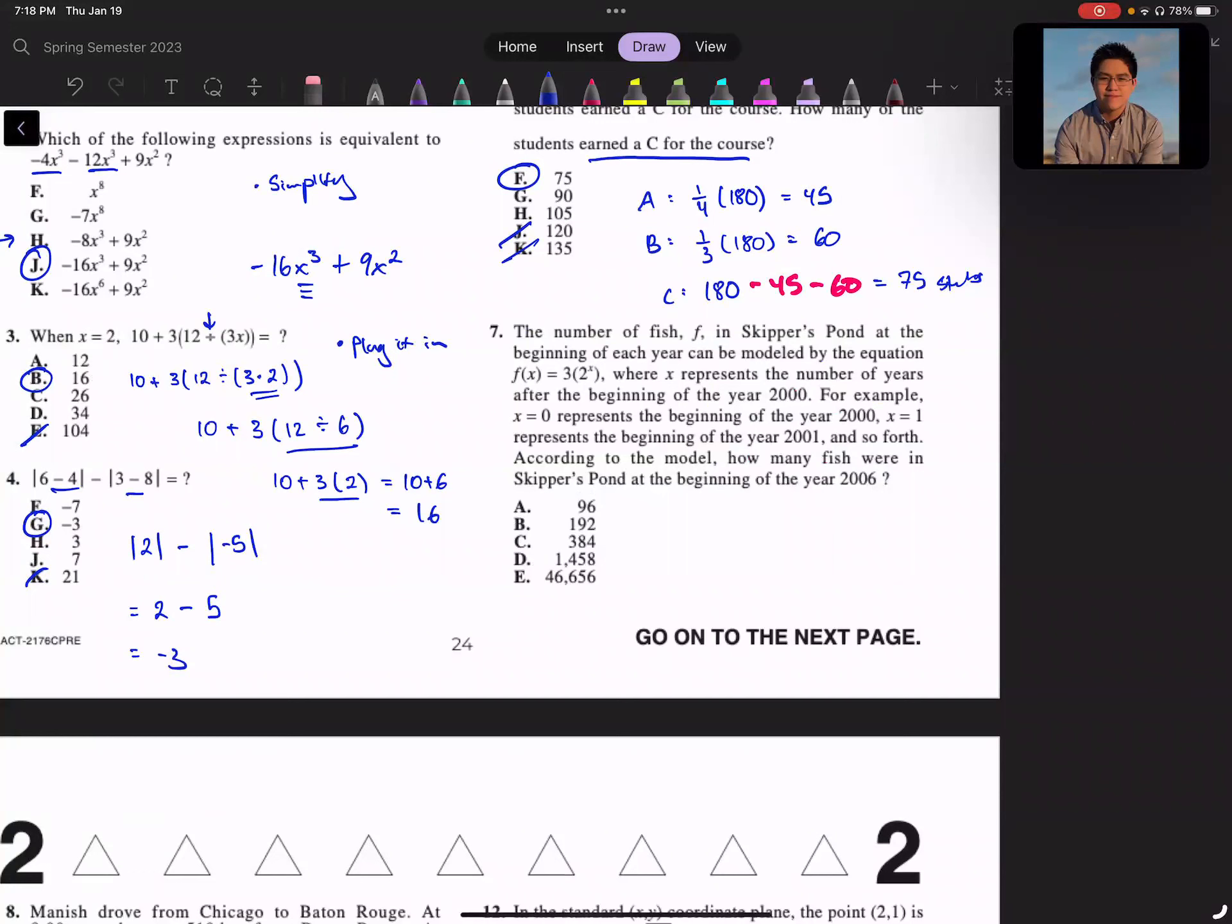Moving on, question seven. The number of fish, f, in Skipper's Pond at the beginning of each year can be modeled by the equation f(x) = 3 × 2^x, where x represents the number of years after the beginning of the year 2000. For example, x = 0 represents the beginning of the year 2000, x = 1 represents the beginning of the year 2001, and so forth. According to the model, how many fish were in Skipper's Pond at the beginning of the year 2006?